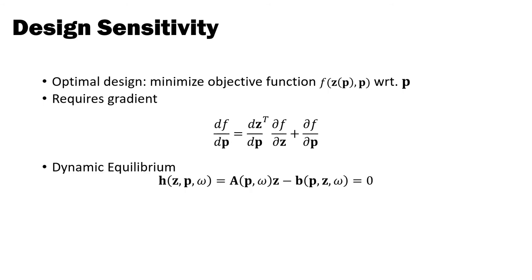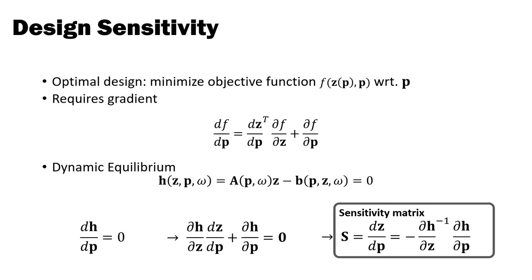To arrive at an expression for dz/dp, we require that any change in design parameters should lead to a corresponding change in Fourier coefficients such that the system is again in dynamic equilibrium. This is equivalent to asking that the total derivative of h with respect to p should be zero. And once we expand this expression into partial derivatives, we obtain a linear system of equations for dz/dp that we solve to obtain the so-called sensitivity matrix S. This frequency space design sensitivity matrix forms the basis for our forward and inverse design tools that I'll explain next in the context of a set of examples.